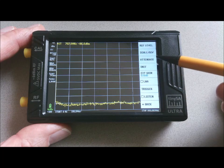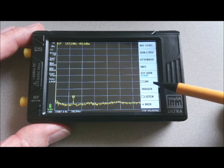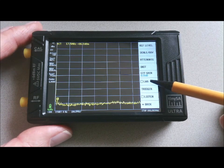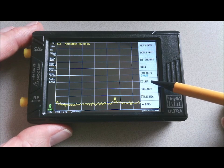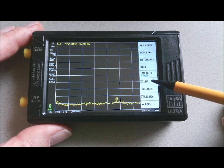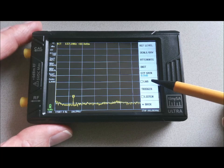In the level menu, there's also a new item, and that's the LNA. The LNA provides 20 dB of extra gain if you have very low level signals.